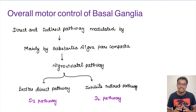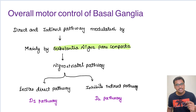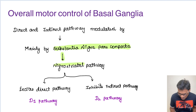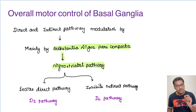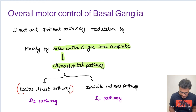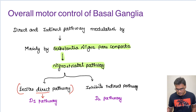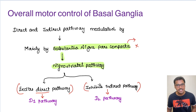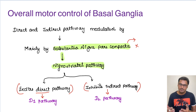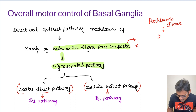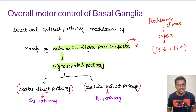There is one more structure keeping basal ganglia mechanisms in overall motor control — the substantia nigra pars compacta, which is affected in Parkinson's disease. Through its nigrostriatal pathway going to the striatum, in a normal individual it excites the D1 pathway (the direct pathway) and inhibits the indirect pathway (D2 pathway). If the substantia nigra pars compacta is not functional, the D1 pathway gets inhibited and the D2 pathway gets excited. In Parkinson's disease, this leads to various movement disorders which we will study in the disorders of basal ganglia.